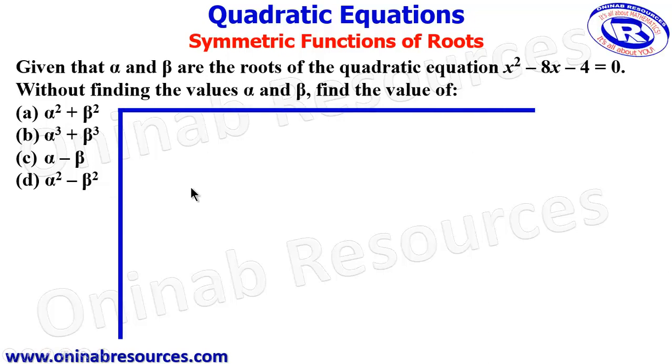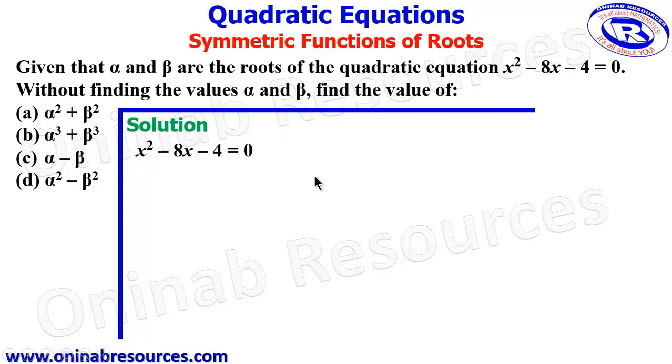So we'll start with the solution of the problem. In our solution, we are going to find the sum and product of the roots, where the sum is alpha plus beta and the product is alpha beta. We know that x squared minus the sum times x plus product equals 0. So if this is compared with the original equation, we see that alpha plus beta equals 8,